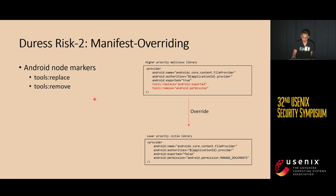Another risk is the manifest duplicate risk. Library developers can place security protections on library components using certain manifest attributes, like Android permission to limit access, or android:exported to determine whether a component is available to other applications. However, we noticed that Android provides a set of node markers. By using these node markers, a malicious library with higher priority can remove the protection by overriding the related attributes, potentially lowering the security protection.